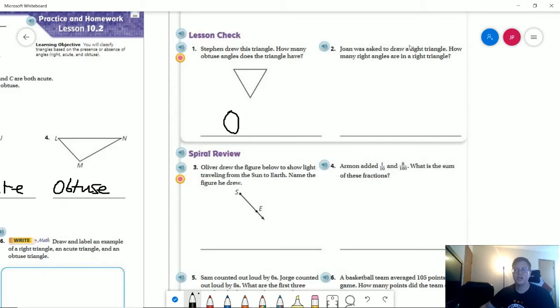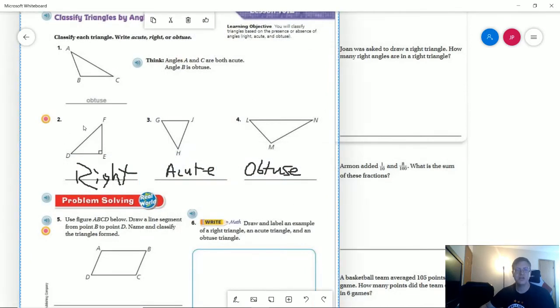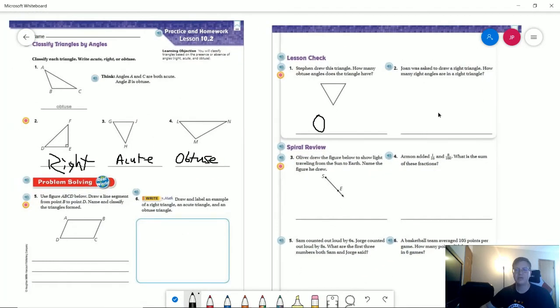Number two: Joan was asked to draw a right triangle. How many right angles are there in a right triangle? Well, we can come back over and look at our example. I'm just going to drag this over. So number two here is our right triangle. There is one right angle. So our answer for that one should be one.